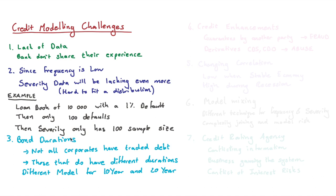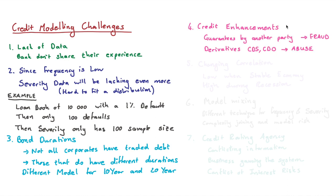Even if you're focusing on publicly traded debt and have some information to build models on, it's not straightforward because bonds can have credit enhancements. Sometimes you can buy a bond that is guaranteed by another party, and your model then has to determine the probability that the original party defaults and the guarantee isn't respected.